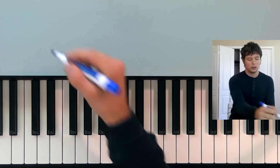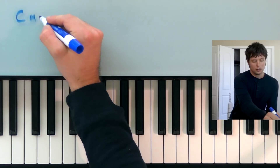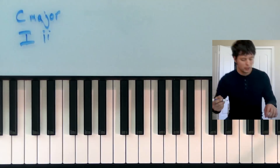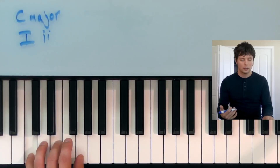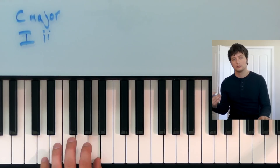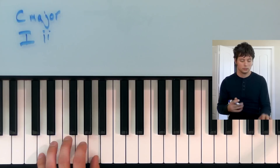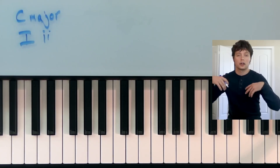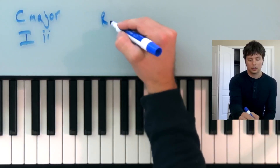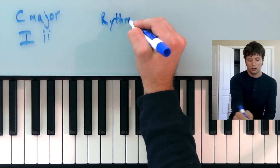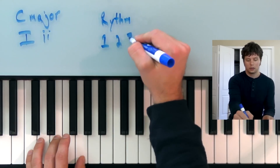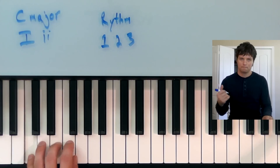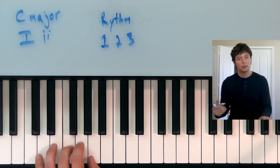As far as our chord progression, we'll keep it as simple as we can. We'll be in the key of C major, and we'll do a 1-2 progression. That means we're playing a C chord, then a D chord. We'll just go back and forth between those two chords. As far as rhythm, without getting into the details of how rhythm works, we'll just do this 1-2-3 pattern, 1-2-3, 1-2-3. We'll take each chord and play through that pattern four times.